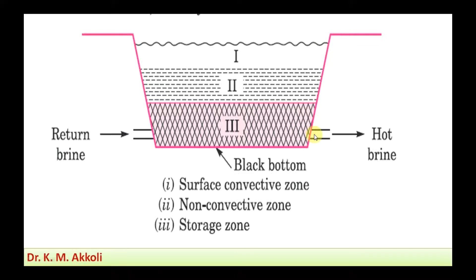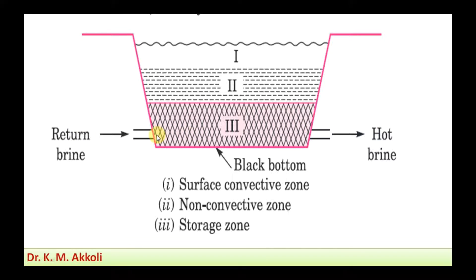A black lining is provided at the bottom — usually a durable plastic material — so that heat is not lost from the lower layer to the outside. The heat is received and stored there. The hot brine water is then supplied for power generation. When hot brine is taken out from the solar pond, fresh lower-temperature brine water is added back to the pond to continue the process.